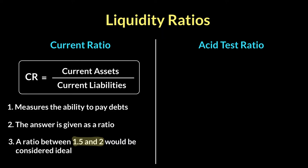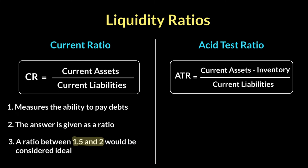There's another liquidity ratio considered to be a truer reflection of the liquidity of a company — the asset test ratio, also known as the quick ratio. The only difference from the current ratio is that when calculating the asset test ratio, the company deducts the amount of inventory from the current assets. The rest remains the same: total current assets minus inventory, divided by current liabilities.